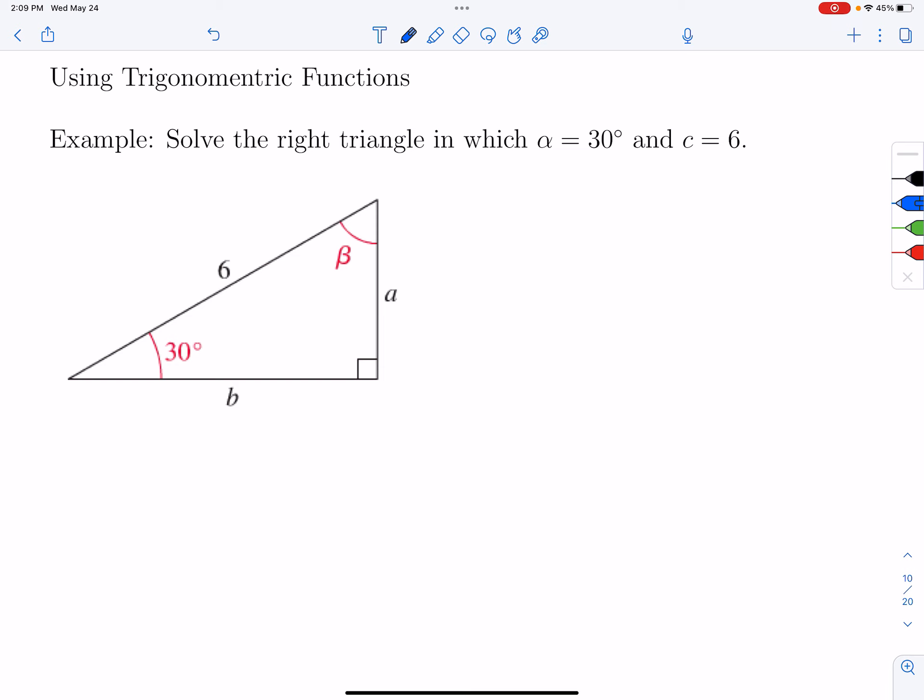So the first one says solve the right triangle in which alpha is equal to 30 degrees and side c is equal to 6. So this is c here, and what it means to solve a triangle, it means to find all the angles and find all the sides. So a triangle has three angles, three sides, so we want to find six values here.